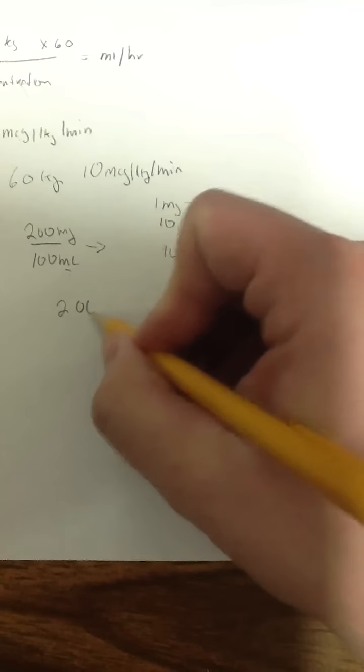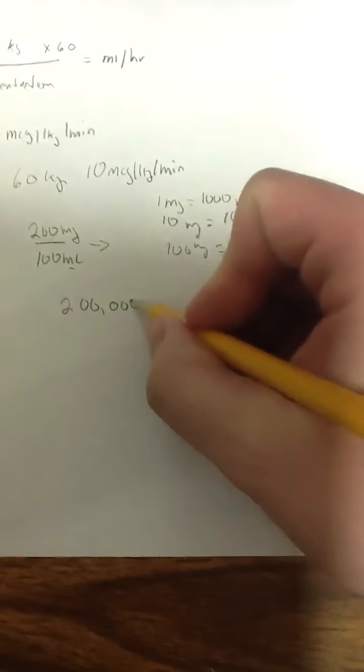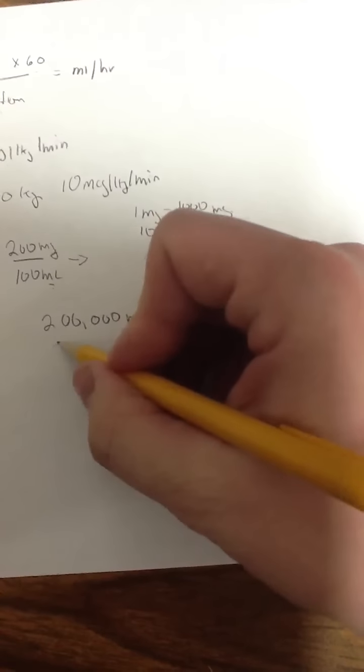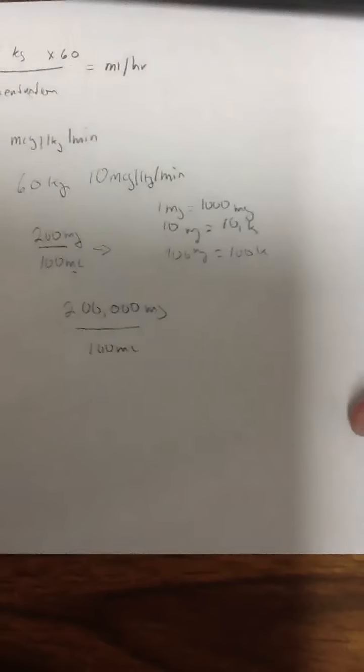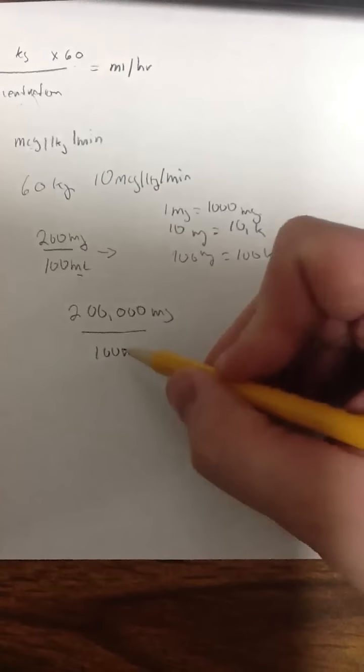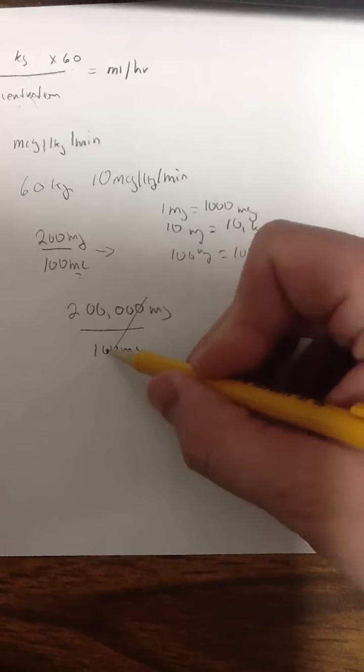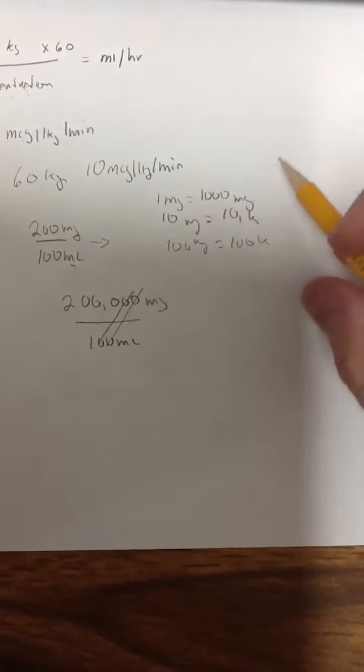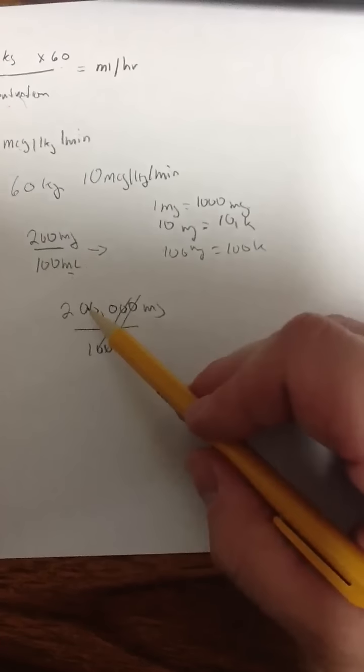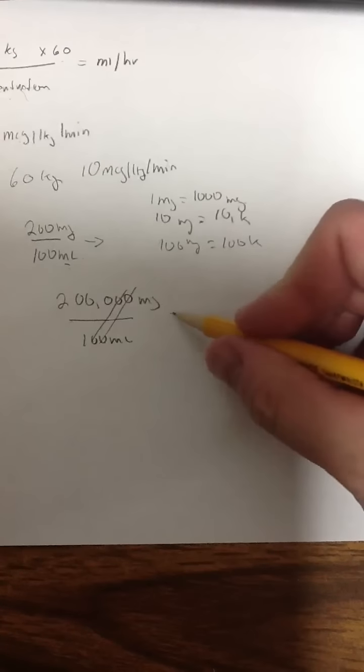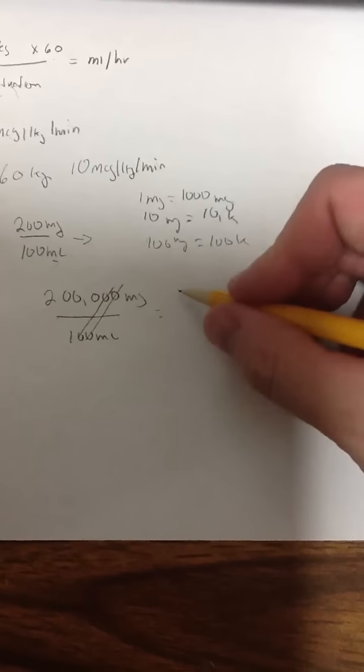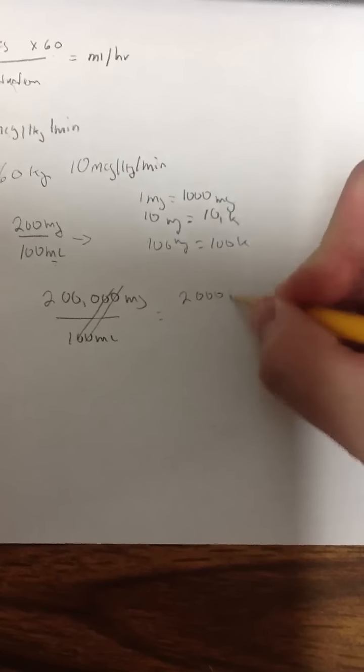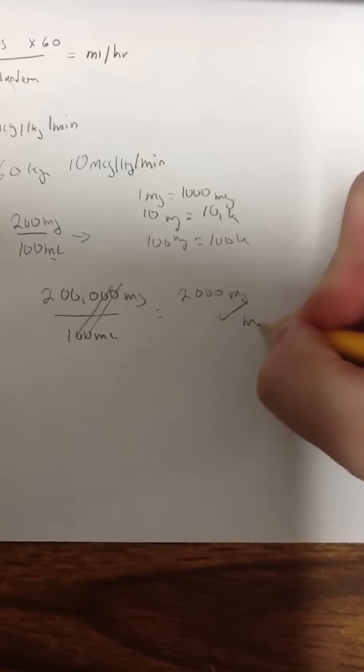So 200,000 micrograms in 100 milliliters. Everybody's okay so far? Let's go ahead and condense this down. I have some zeros. Why not just take out these zeros, cancel them out? What does that give me left over? That's 2,000 micrograms per 1 milliliter. That's all I have left over is 2,000 micrograms per milliliter. So now I have my concentration.